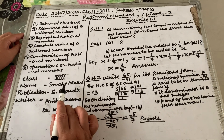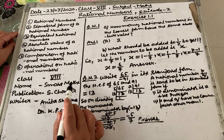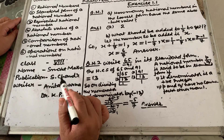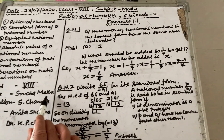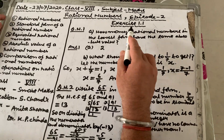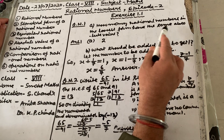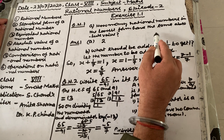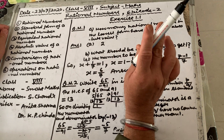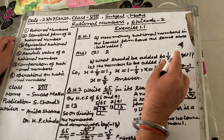Start doing the exercises. Whenever I teach you, keep this book with you so that you can follow along easily. Now coming to exercise 1.1 — question number 1: how many rational numbers in the lowest form have the same absolute value? The answer is 2. There will be 2 rational numbers in the lowest form for a given absolute value.